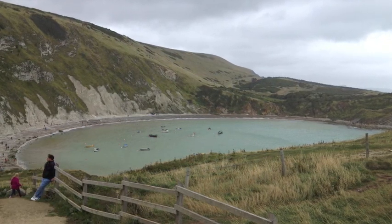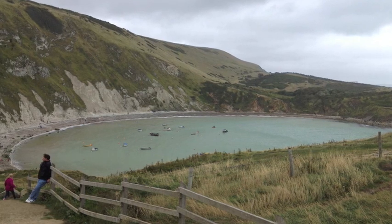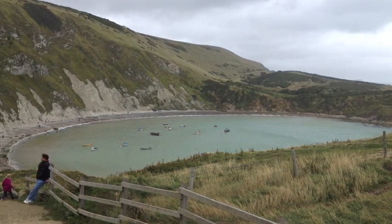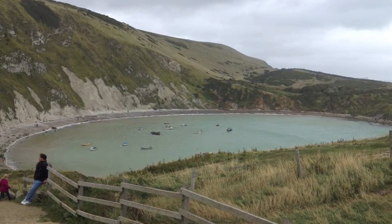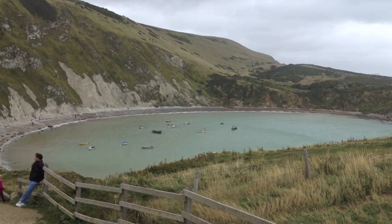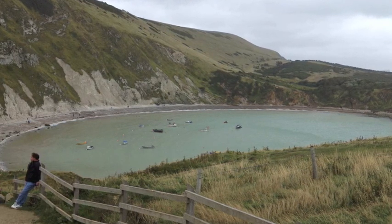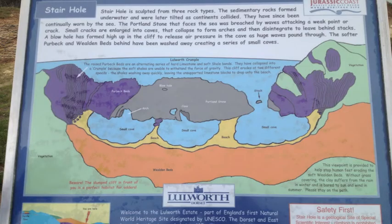Lulworth Cove is an excellent example of a bay which has been eroded out of a concordant coastline. A concordant coastline is one with bands of different types of rock running parallel to the coastline. The sea has eroded away the less resistant rock to form a C-shaped incision or bay in the coastline, leaving sections of more resistant rock to form prongs or headlands either side, and also a more resistant back to the bay. In Lulworth Cove's case, the less resistant rock is soft sedimentary greensand and Wealden clay, which has been eroded away to form the bay.